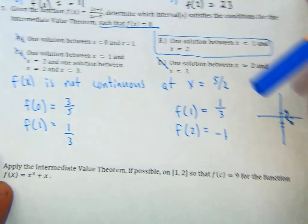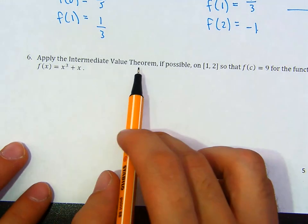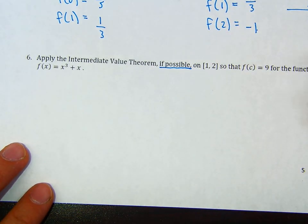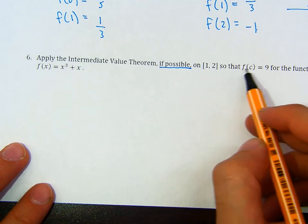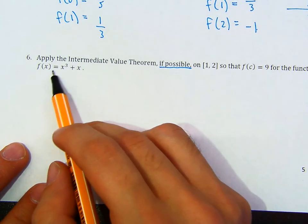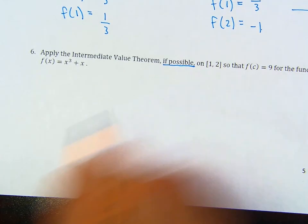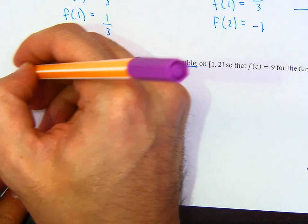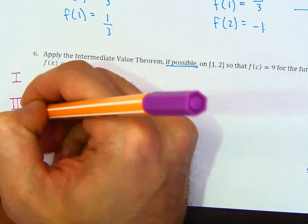Let's take a look at number 6. Given the function f of x equals x cubed plus x, apply the intermediate value theorem if possible on the interval from 1 to 2 such that f of c equals 9. Let's see if we can use the intermediate value theorem. We need to check three conditions.